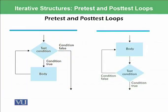Let's look at an example using a flowchart. On the left side, we have the test condition first. If the condition is true, the loop enters into the body and then goes back to the condition. If the condition is false, the loop is terminated.